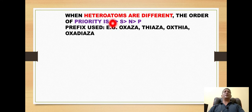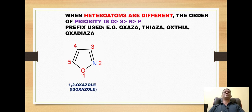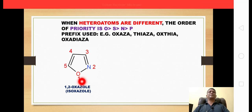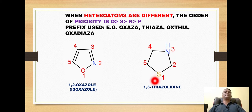For example, in a ring with two heteroatoms — oxygen and nitrogen — we use the prefix 'oxaza', and the name 'oxazole' shows the prefix 'oxaza'. In another ring with sulfur and nitrogen, sulfur has priority over nitrogen, so the prefix used is 'thiaza'. The name of this ring is 'thiazolidine', where 'thiaza' represents the heteroatoms according to their priority order.